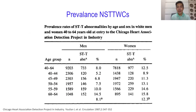The prevalence of this subtle repolarization abnormality is quite common. In a cohort of American individuals, they have been shown to be present in around 8 to 12 percent of ECG tracings, and are more common in women.